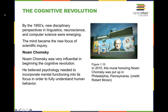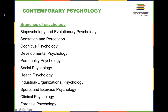For the longest time, psychology's definition was the scientific study of behavior and mental processes, but as for the OpenStax psychology textbook, the definition we're using is the scientific study of behavior and the mind. Psychology also has sub-branches: biopsychology, sensation and perception, cognitive psychology, developmental psychology, personality, social, health, IO, sports and exercise, clinical, as well as forensic psychology.